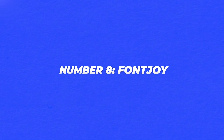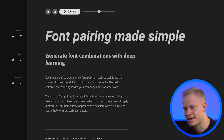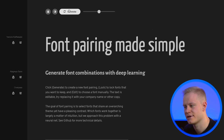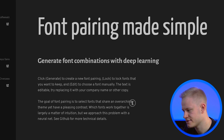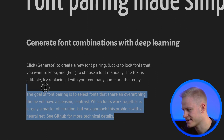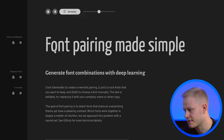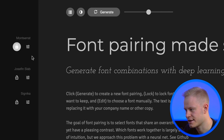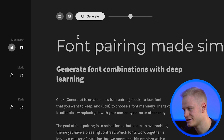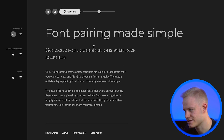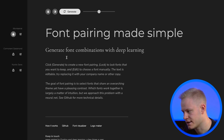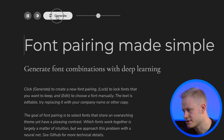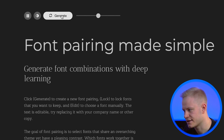Tool 8 is Fontjoy. You can generate different font combinations and it pairs a headline font with a subheadline and body text. Once you like one element, you can lock it and continue generating the rest. You can click generate until you find something you're happy with. That's Fontjoy.